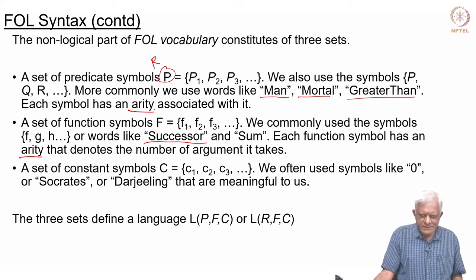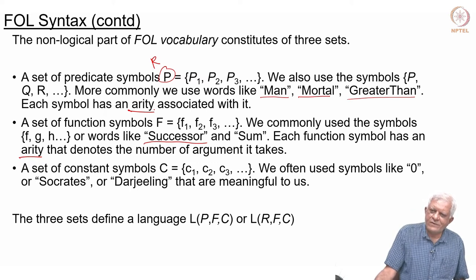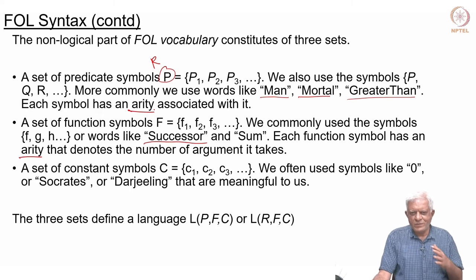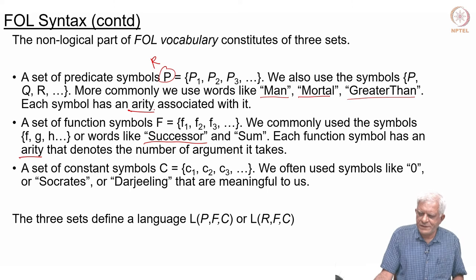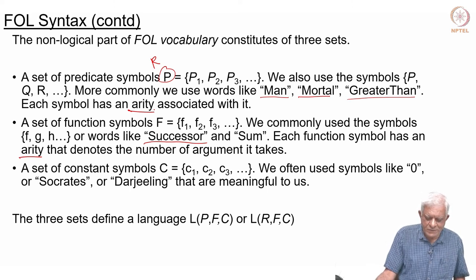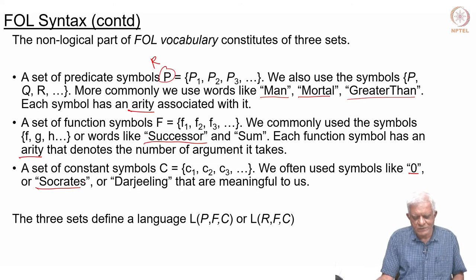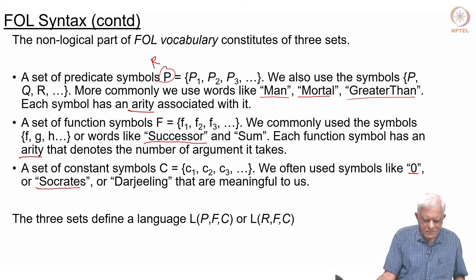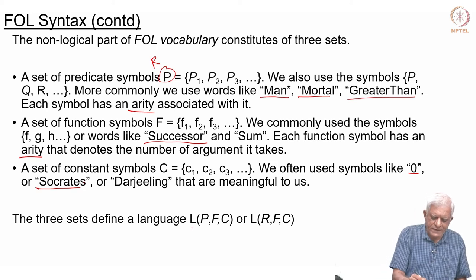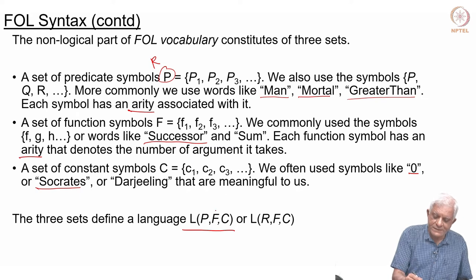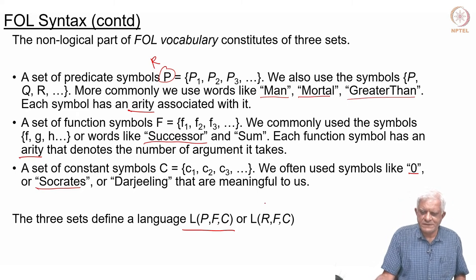The third set is a set of constant symbols. These are symbols which stand for known individuals in the domain. Typically in a formal sense we might use c1, c2, c3, or sometimes a, b, c. But more often we would use symbols like 0, or 'Socrates' for the individual we are calling Socrates, or 'Darjeeling' for the city in India which we call Darjeeling. The three sets together define the language: the set of predicate symbols, the set of function symbols, and the set of constant symbols.